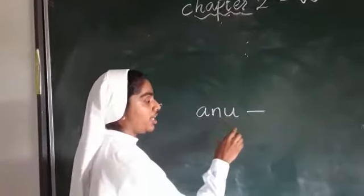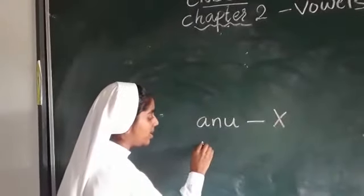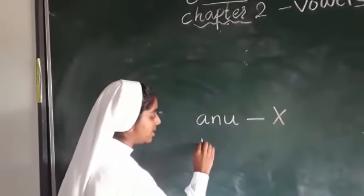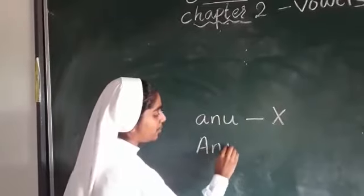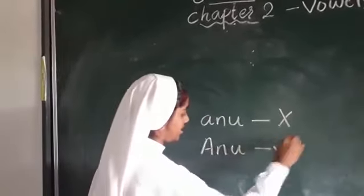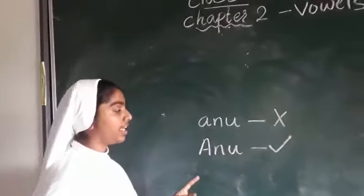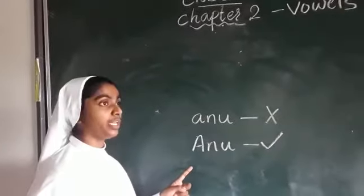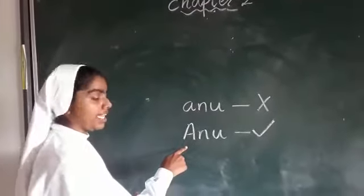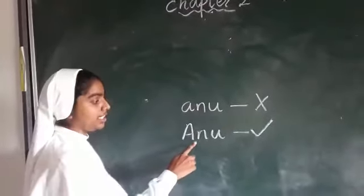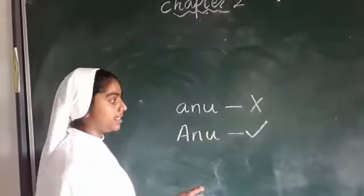Is it correct? No. Then how do you have to write? A is a capital letter — Anu. This is correct. When we write a person's name, you have to begin with the capital letter. A is a capital letter, and the rest of the remaining letters will be small letters.